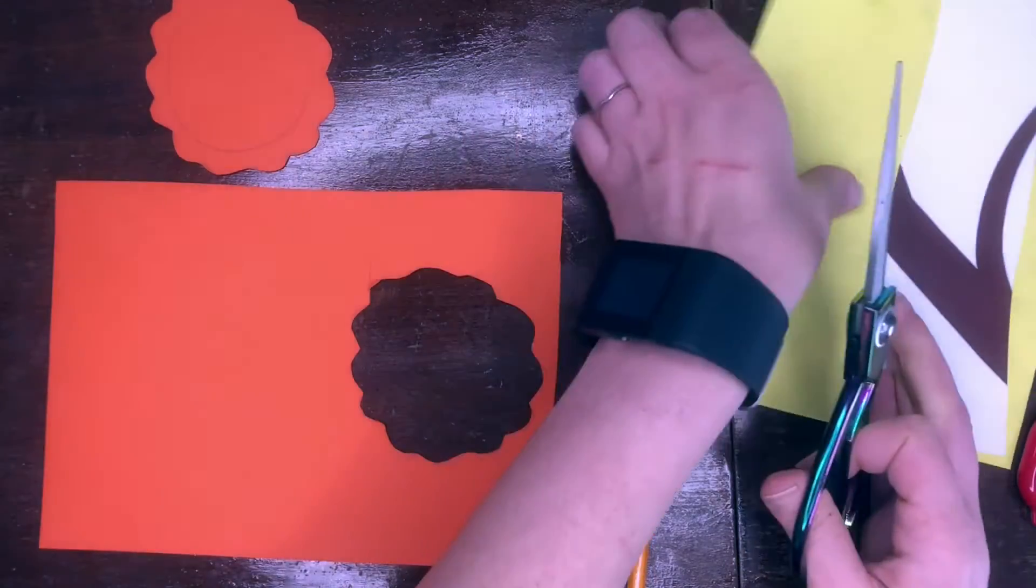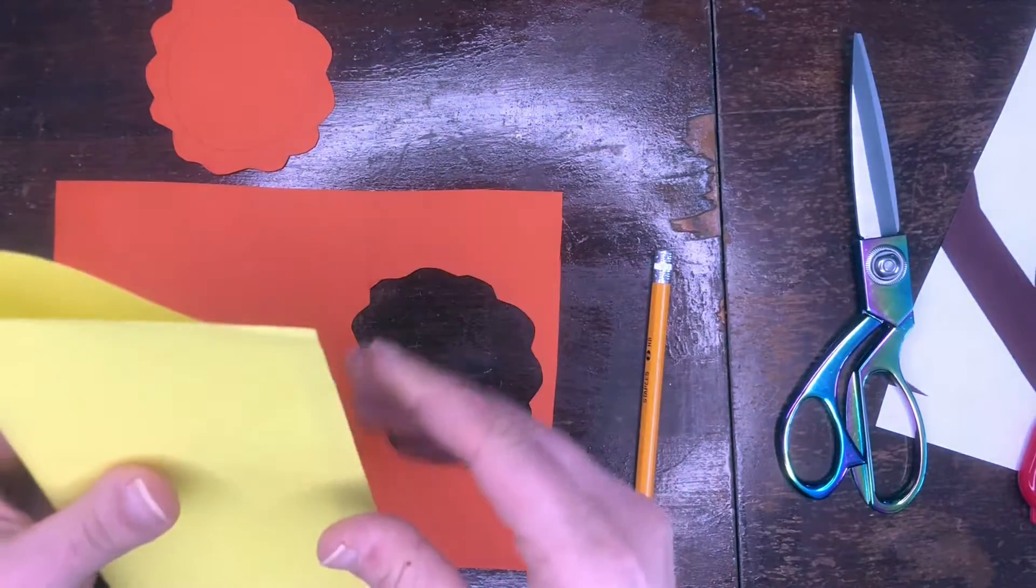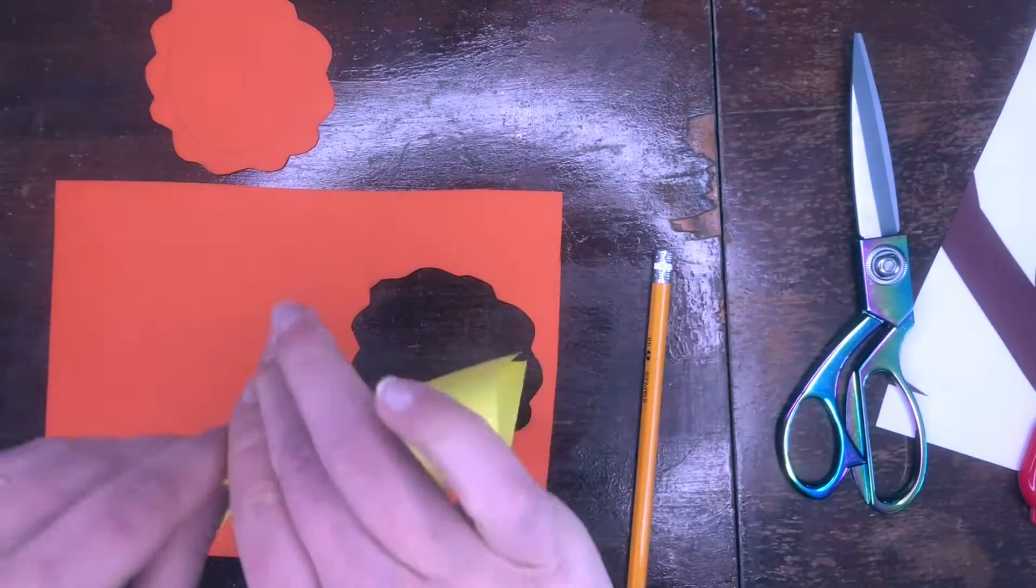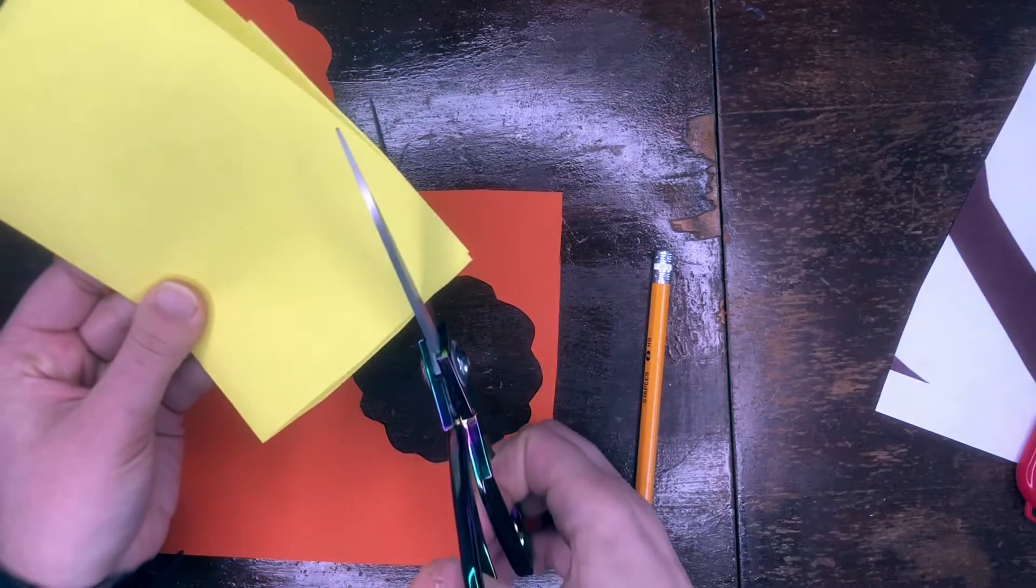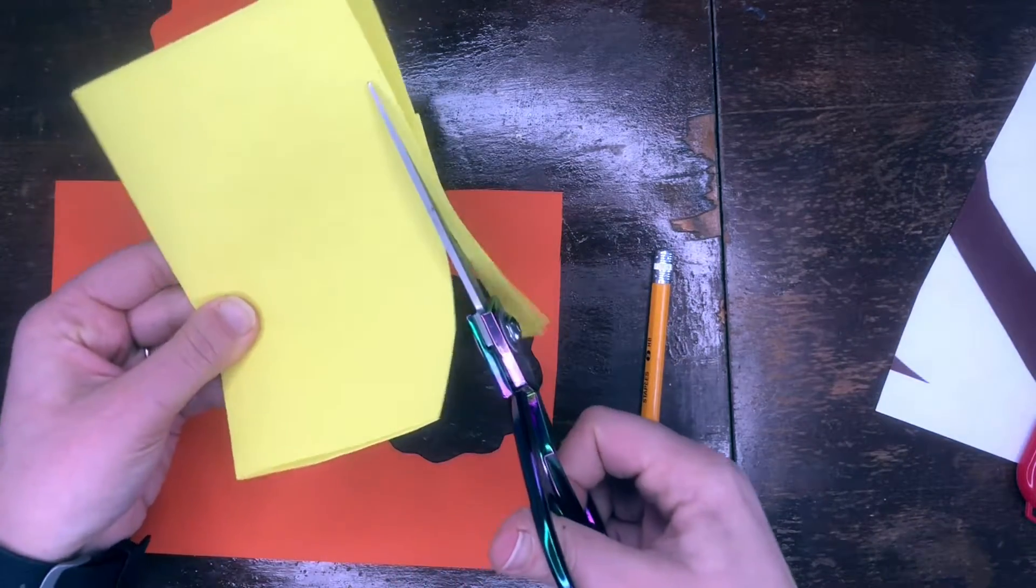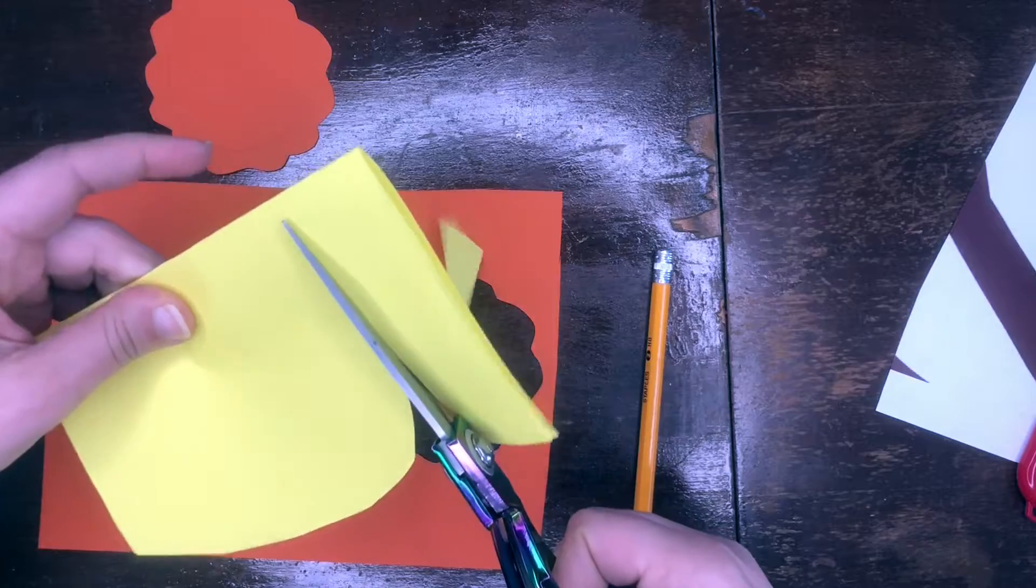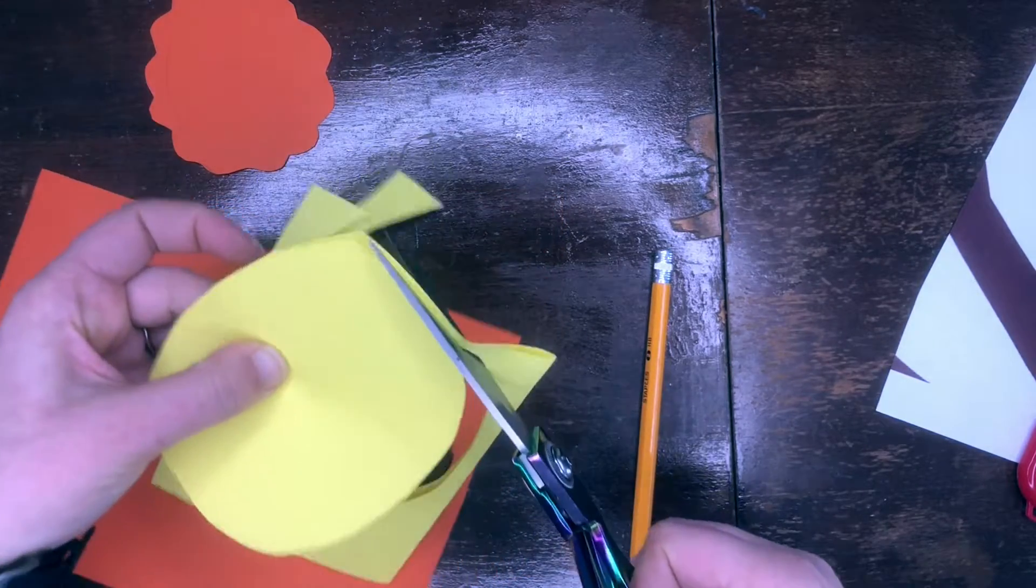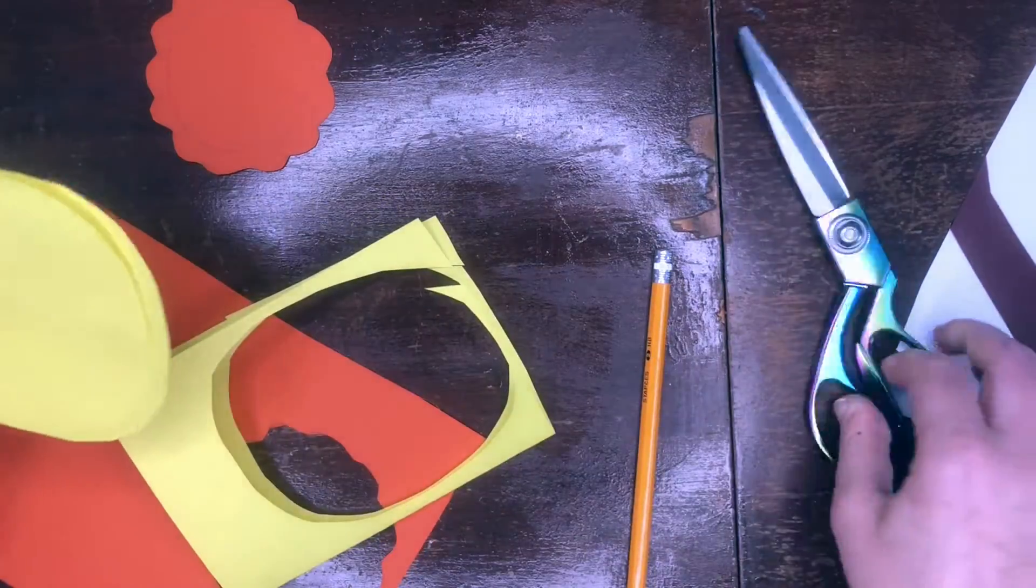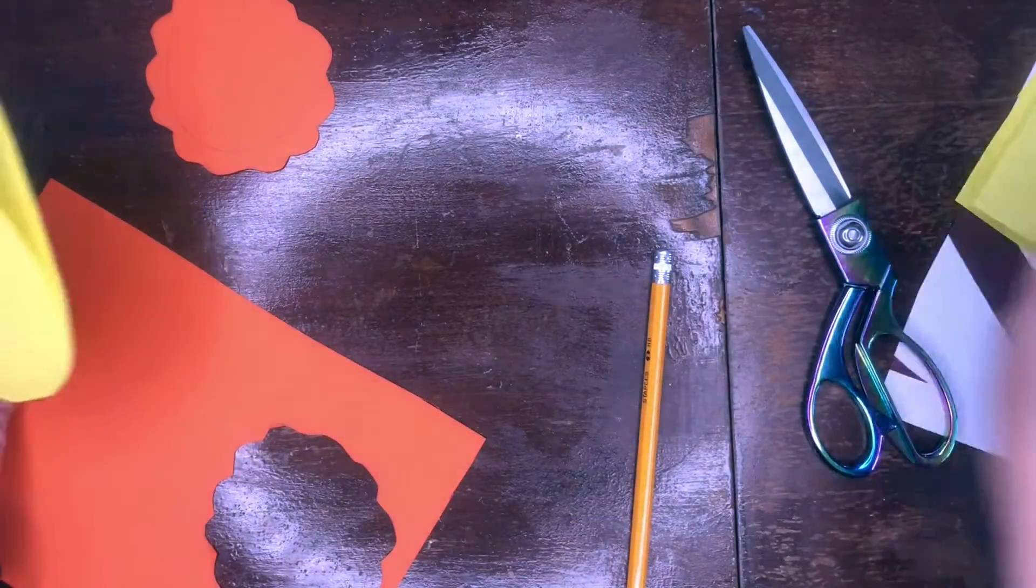There we go. Now, we're gonna want two yellow circles cut out. I'm just gonna fold my paper in half and cut it twice. And we cut it once and start cutting it twice. There we go. Got my two cut out.